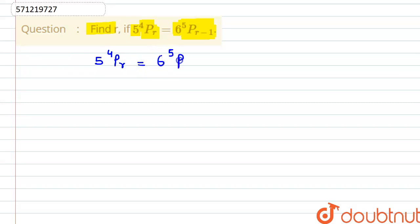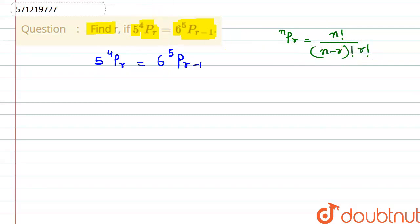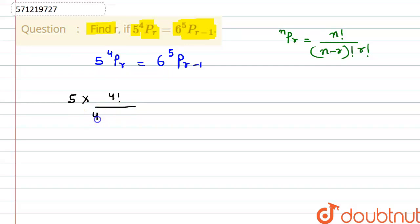We have 6 times 5Pr-1, and we know that nPr can be written as n factorial divided by n minus r factorial into r factorial. So here if we use this formula, we can write this as 5 multiplied by 4 factorial divided by 4 minus r factorial into r factorial.